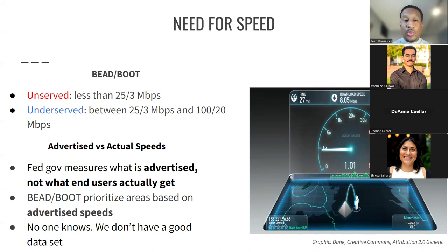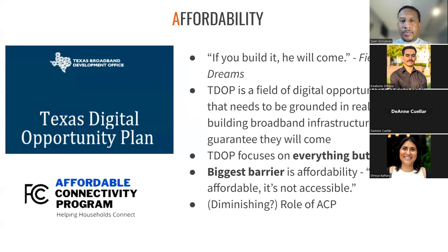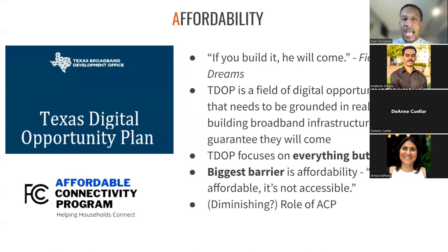Moving on to the second A of our three-layer cake. The availability part is the infrastructure — the fundamental physical networks that need to be in place in order to access high-speed internet for anyone. But the biggest barrier, it turns out, for folks who do not have home internet service is affordability.